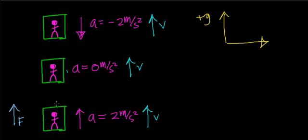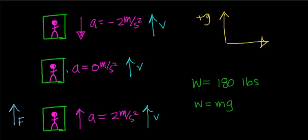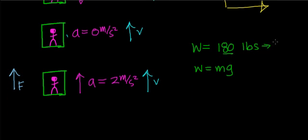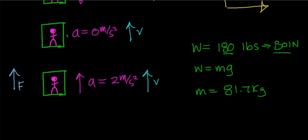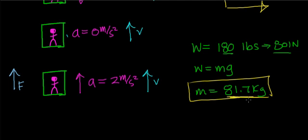We're going to use the upward direction as our positive y-axis. Now I want to examine why your weight appears to increase. We're going to apply Newton's second law to figure that out. To make this calculation, let's assume that if you were to step on your bathroom scale far away from any elevator, you measure your weight as 180 pounds. Using the relationship weight equals mass times gravitational acceleration, you can convert this to 801 Newtons, and then calculate that your mass is equal to 81.7 kilograms.